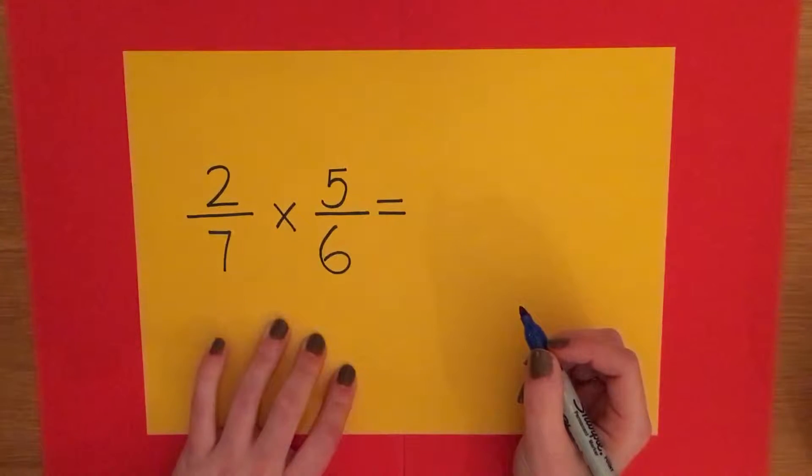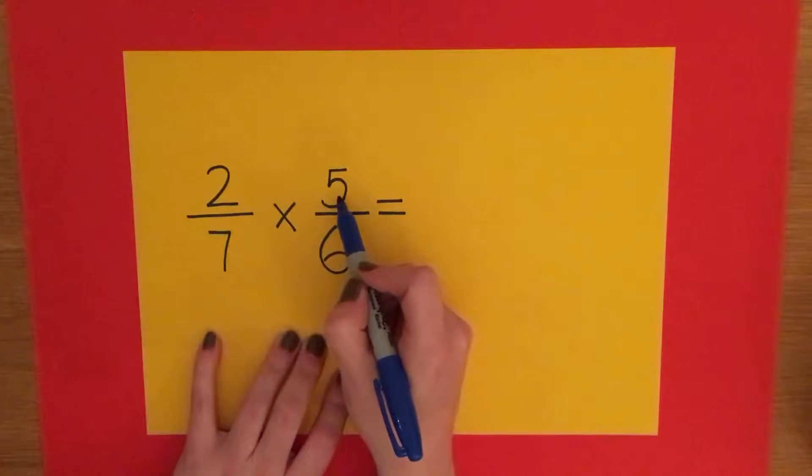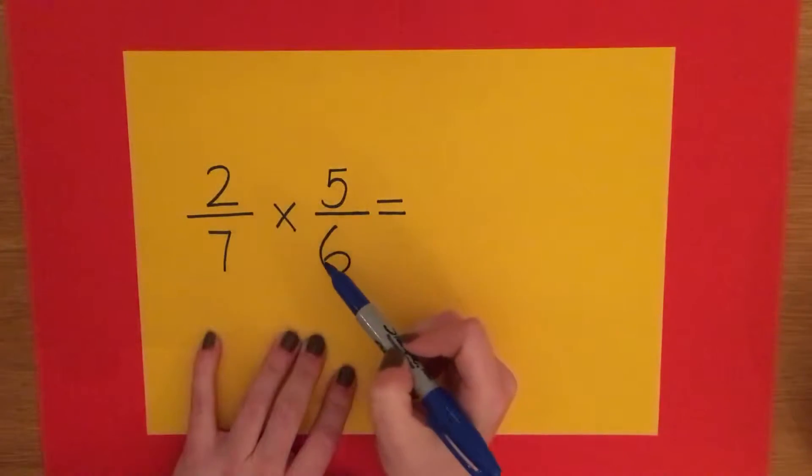So, multiplying fractions is no big problem. Top times top over bottom times bottom.